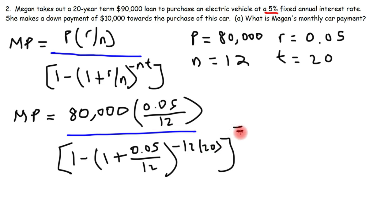So let's simplify this. 80,000 times 0.05 divided by 12, this is 333.3 repeating. 1 plus 0.05 divided by 12, that's going to be 1.00416 repeating. Now 12 times 20 is 240, so this is going to be raised to the negative 240.